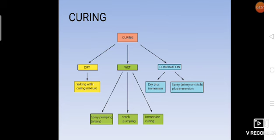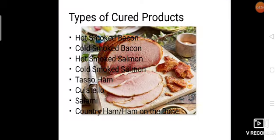Types of cured products: hot smoked bacon, cold smoked bacon, hot smoked salmon, cold smoked salmon, tasso ham, culatello, salami, country ham. These are some of the examples of cured products. In the background you can see meat, it is a cured meat. So this was all about curing of meat.